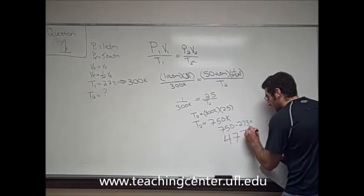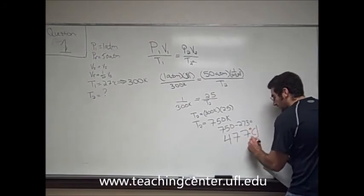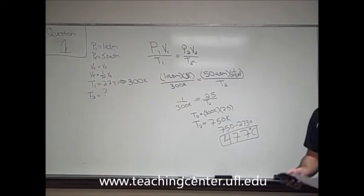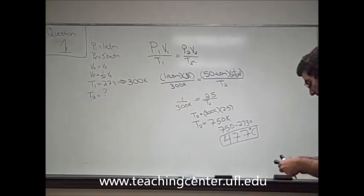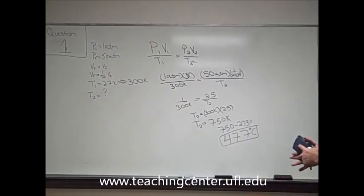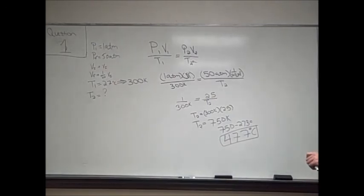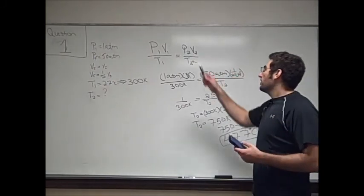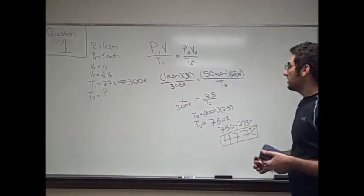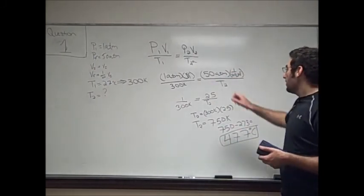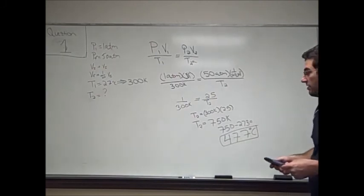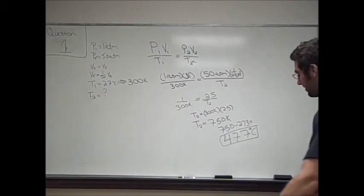So this question was actually fairly simple as long as you pay attention to the final units that Dr. Sullivan wanted. So the biggest trick to this question was that you have to convert the original temperature into Kelvin to solve for the temperature in Kelvin for T2, and then he wanted your answer back in Celsius. So we just used P1 V1 over T1 equals P2 V2 over T2 and we went ahead and solved for T2, which is 477 degrees Celsius.